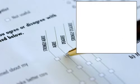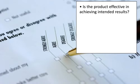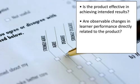A summative evaluation seeks to answer the following two questions: Is the product effective in achieving intended results? And, are observable changes in learner performance directly related to the product? These questions are answered through self-report from learners, observer judgments, measurements, job performance indicators, and learner testing at selected intervals after product delivery.